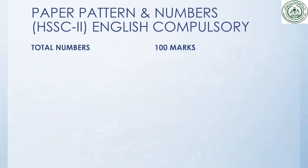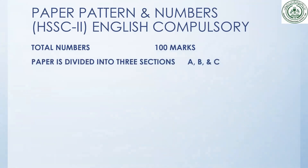Let's discuss the paper pattern and marks distribution for HSSC-2 English Compulsory. Just like in class first year, this is also a 100-mark paper. The paper is divided into three sections: Section A, Section B, and Section C.